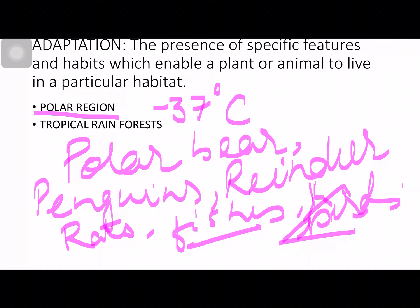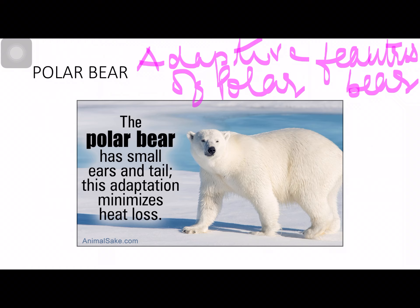In the polar region, the temperature is below minus 37 degrees Celsius. The best examples of animals found here are polar bears, penguins, reindeer, fish, and even birds. Now let's look at the adaptive features of the polar bear — look at the picture very carefully.